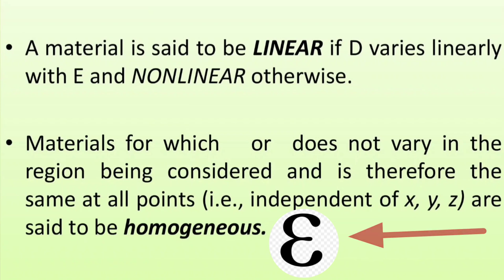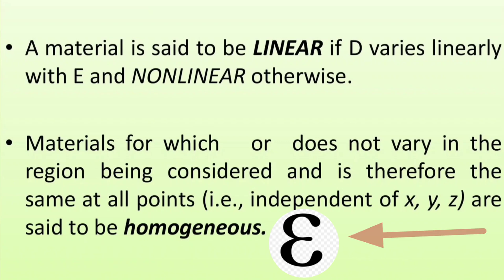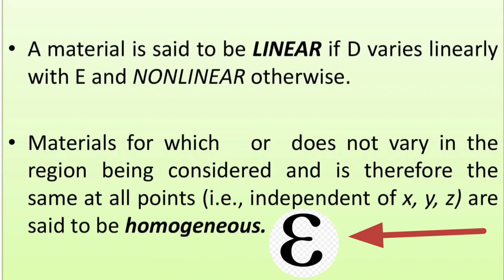In contrast, if D does not vary linearly with E, such materials are called nonlinear. The important aspect is how D varies with respect to E. Now let us see materials for which permittivity epsilon or conductivity sigma does not vary in a given region.